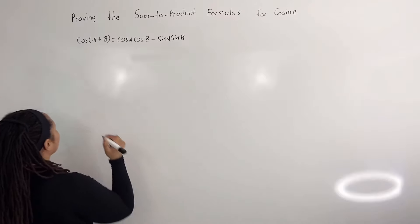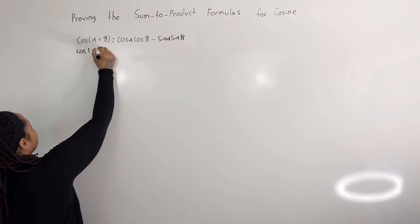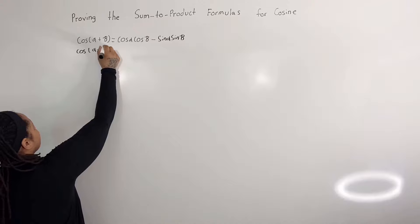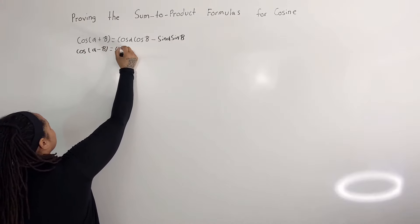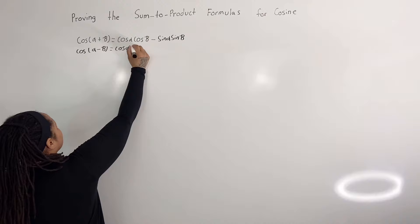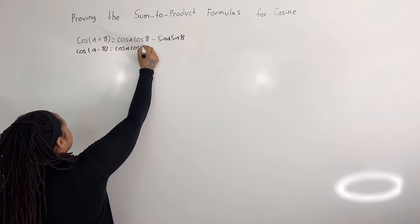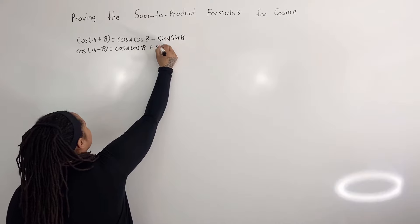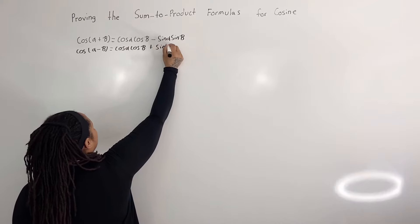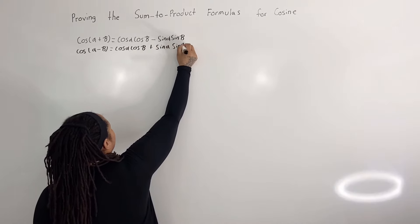And we know that cosine of alpha minus beta is equal to cosine of alpha cosine of beta plus sine of alpha sine of beta.